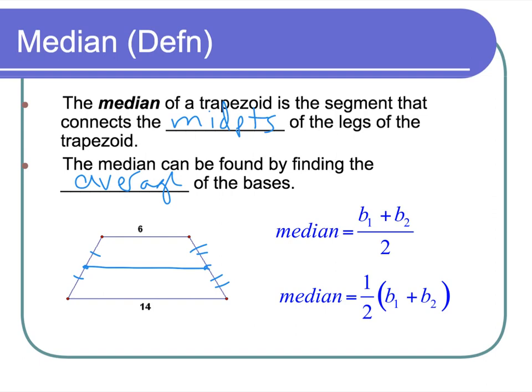This looks like a piece of the area formula, doesn't it? This length here would be 10. 6 plus 14 is 20 divided by 2 is 10. I probably won't ever ask you to find the length of the median, but I might give you the median and a base and ask you to find another base.